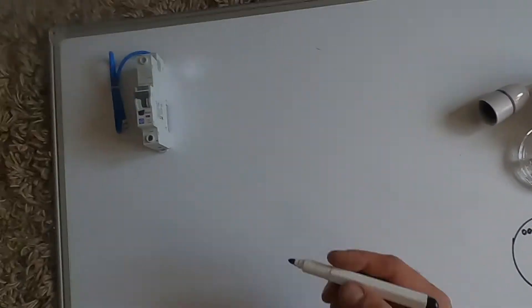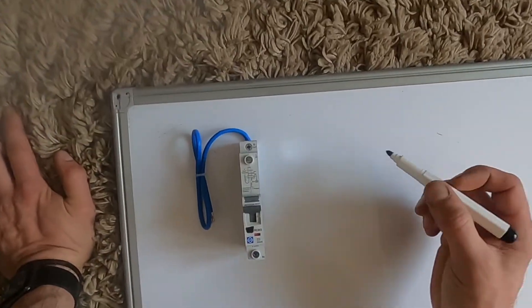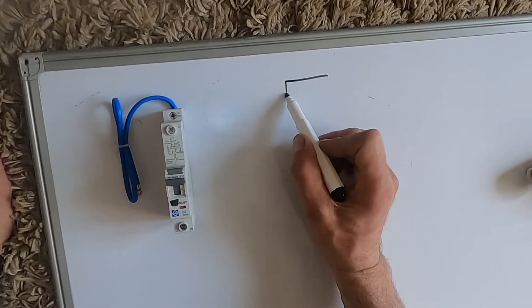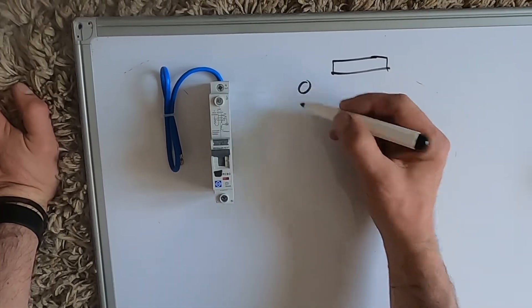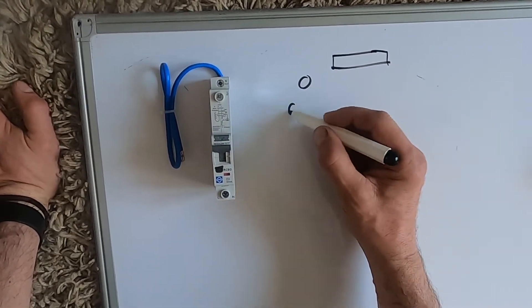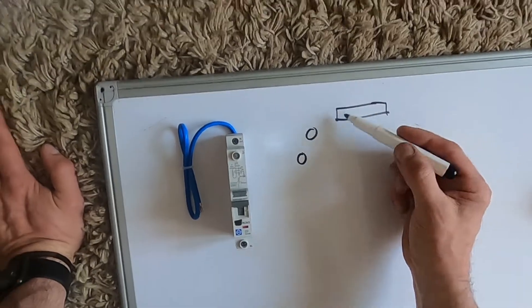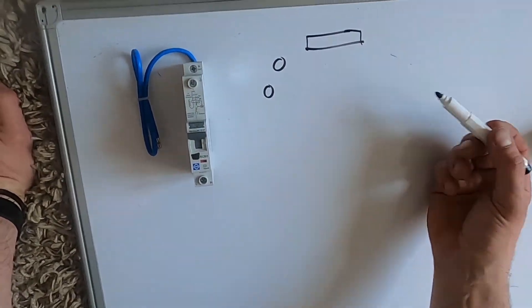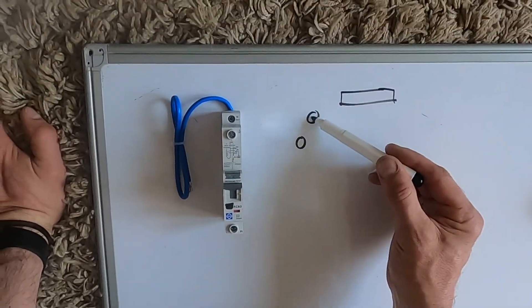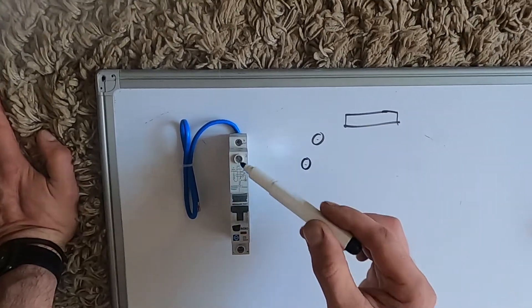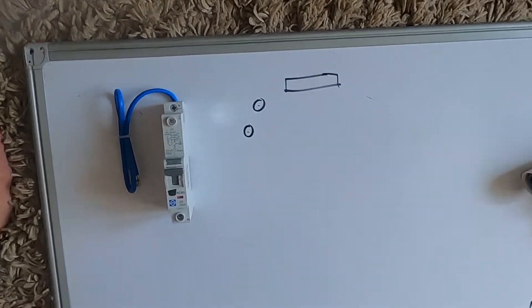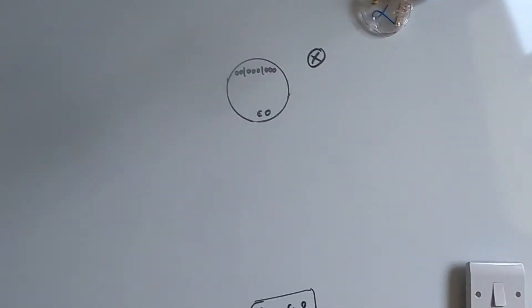And then for the fuse board we're going to have your earth up here, your neutral, and then your live. So your earth bar will just obviously be inside the board, the neutral will be in top of the RCBO, and the live will also be in the top of the RCBO. So then let's see how it's wired.